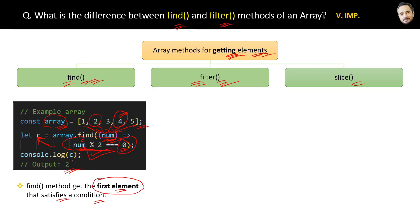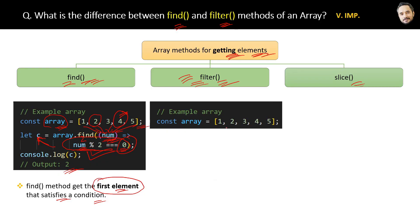This is find. Then we have the filter function of JavaScript. This is used very frequently in many applications and it is very important. Suppose you have the same array. Now the use of the filter function is: the filter function gets an array of elements from an array that satisfies the condition.